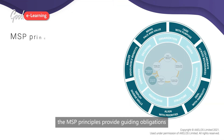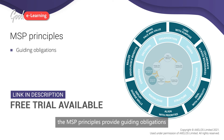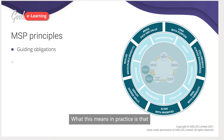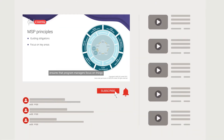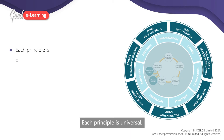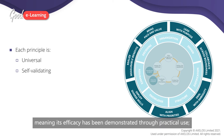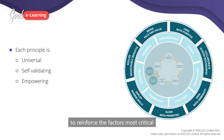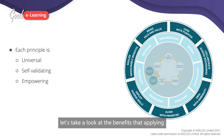As we said in the previous video, the MSP principles provide guiding obligations to ensure a program delivers value. Following the principles ensures that program managers focus on things most critical to positive outcomes, increasing the likelihood that the program delivers benefits. Each principle is universal, meaning it applies to every program; self-validating, meaning its efficacy has been demonstrated through practical use; and empowering, meaning it enables practitioners to reinforce the factors most critical for program success.